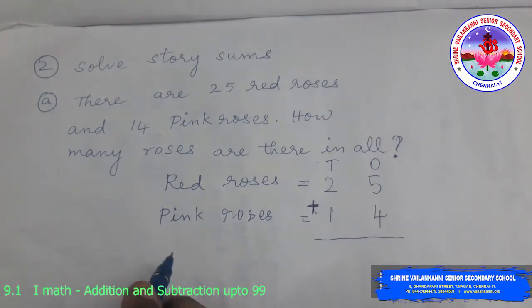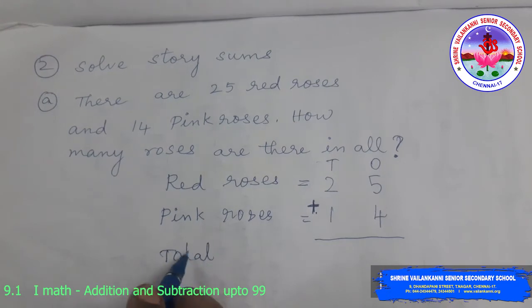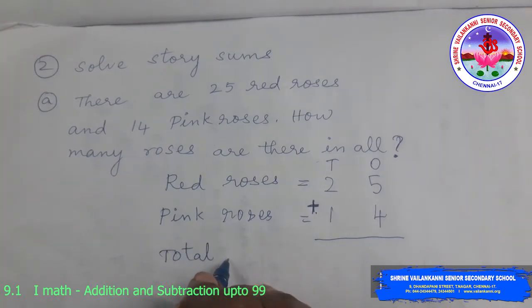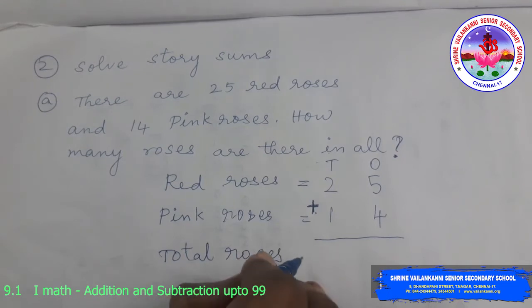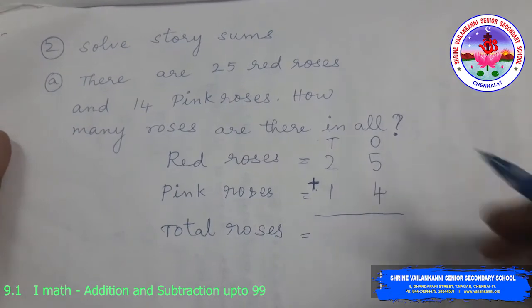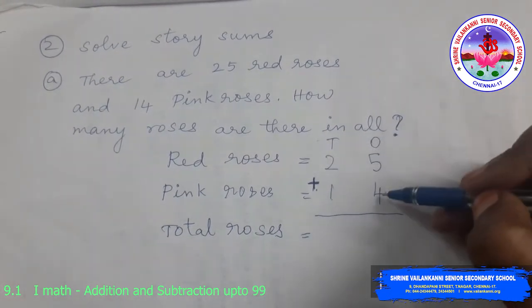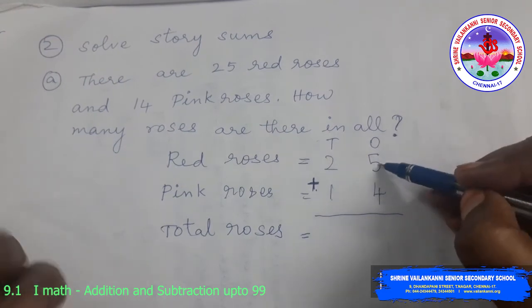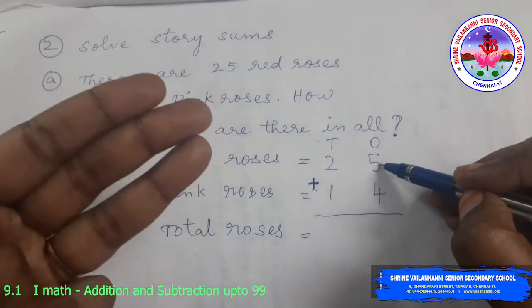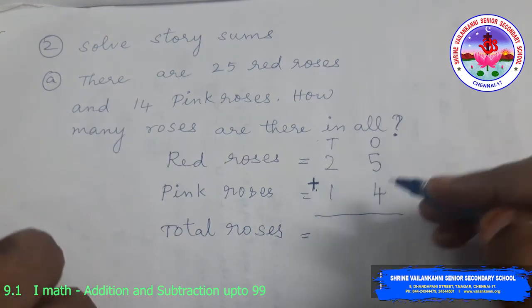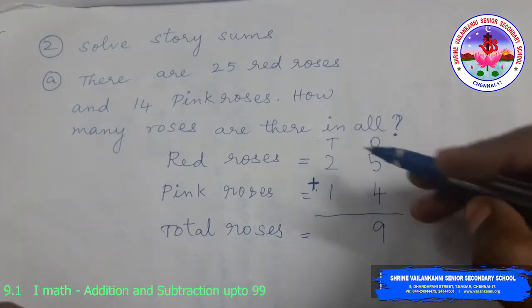So now, we have to find the total roses. Red and pink, both together, how many roses you are having, you are going to find out. So first we have to add the 1s and then we will add the 10s. 5 1s plus 4 1s. 5 in the mind, 4 in the finger after 5: 6, 7, 8, 9. So the 9 1s.